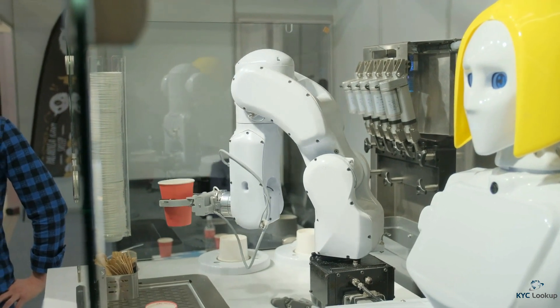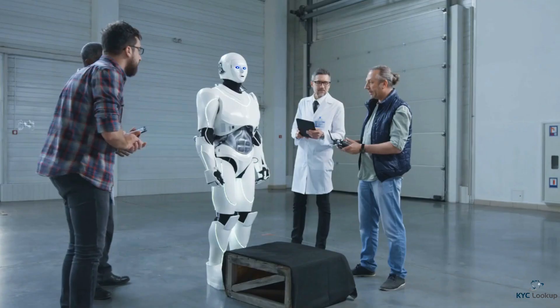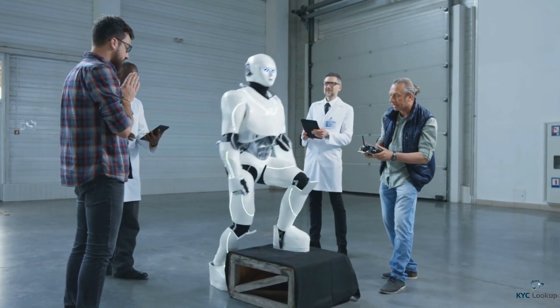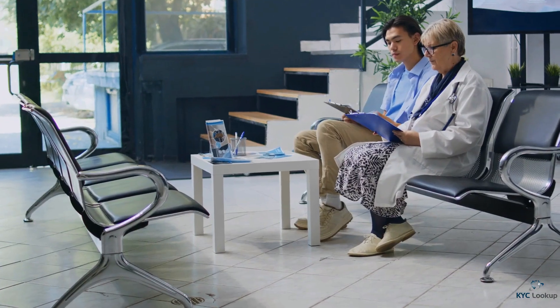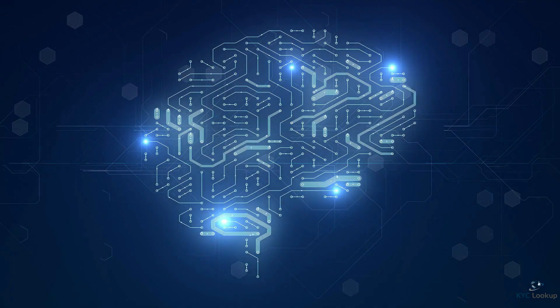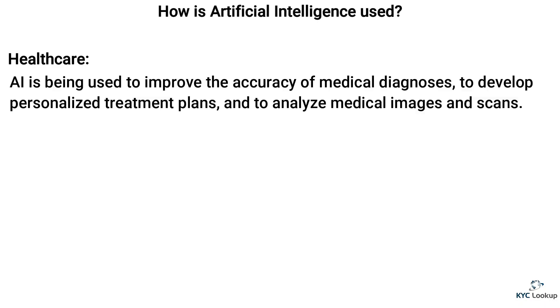How is artificial intelligence used? Artificial intelligence is being used in a wide variety of applications and industries, from healthcare to finance to transportation and entertainment. In healthcare, AI is being used to improve the accuracy of medical diagnosis, to develop personalized treatment plans, and to analyze medical images and scans.